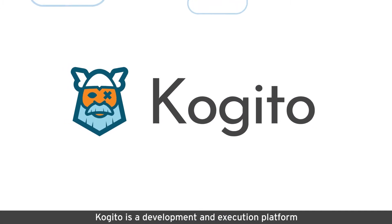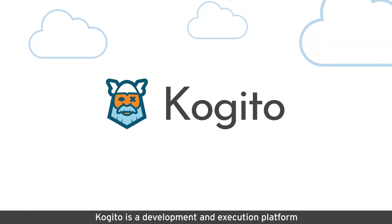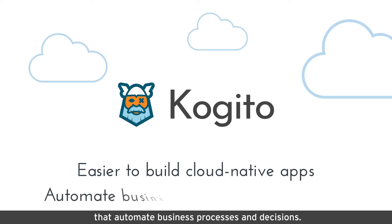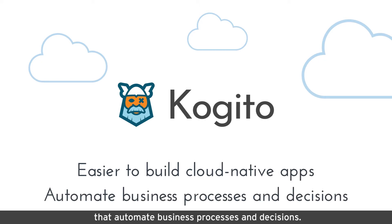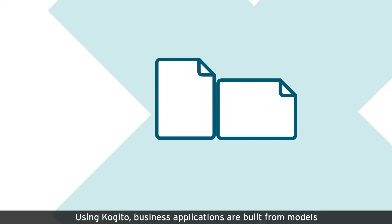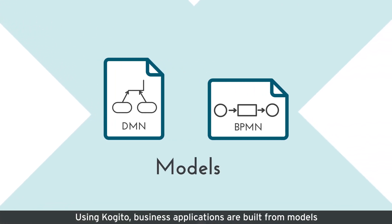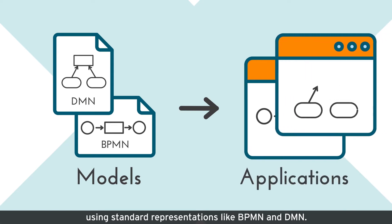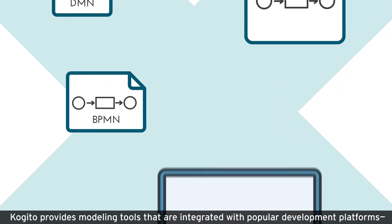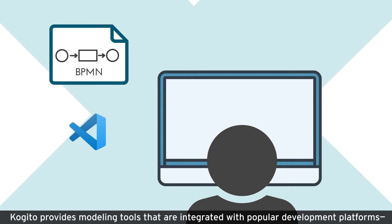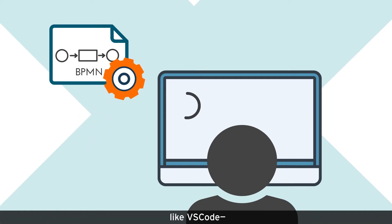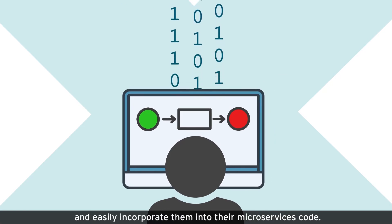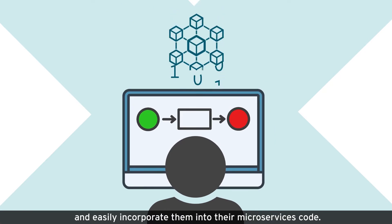Built from the ground up, Cogito is a development and execution platform that makes it easier to build cloud-native applications that automate business processes and decisions. Using Cogito, business applications are built from models using standard representations like BPMN and DMN. Cogito provides modeling tools that are integrated with popular development platforms like VS Code, allowing developers to visually create business models and easily incorporate them into their microservices code.